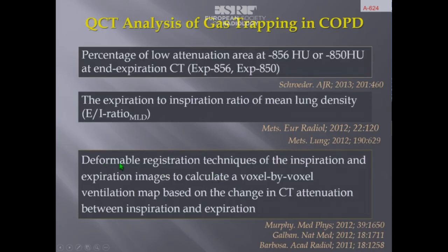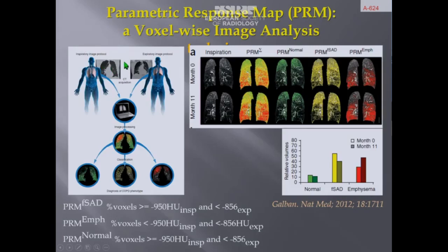New techniques using deformable registration of inspiration and expiratory images permit voxel-by-voxel calculation of a ventilation map based on the change in CT attenuation between inspiration and expiration. The inspiratory and expiratory images are fused using this deformable registration technique. According to different double thresholds, we can select voxels of normal lung in green, voxels of emphysema in red, and voxels of non-emphysematous lung presenting small airway disease responsible for gas trapping.